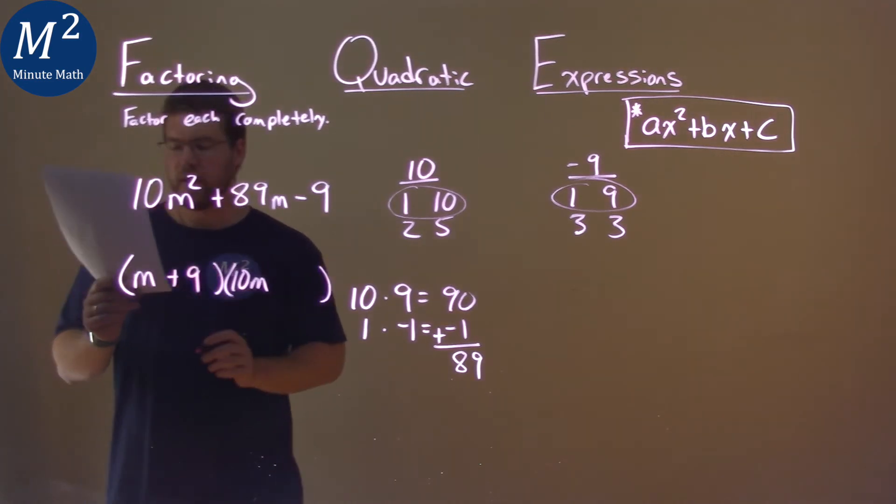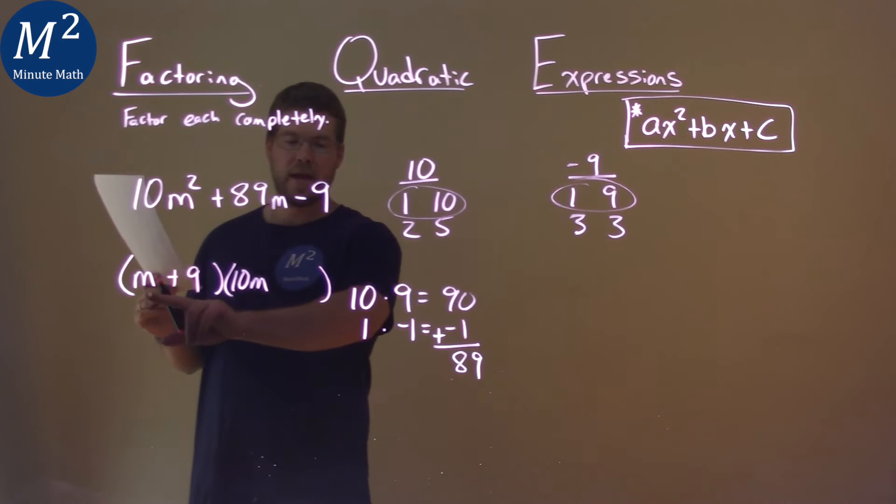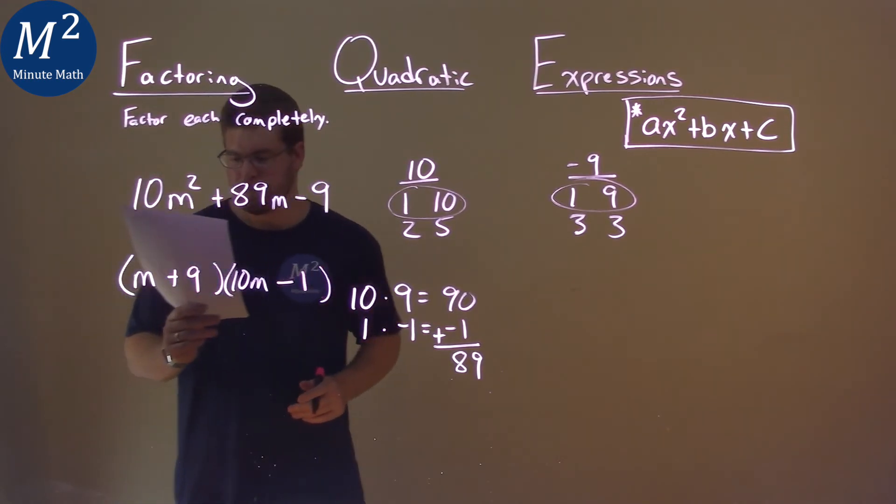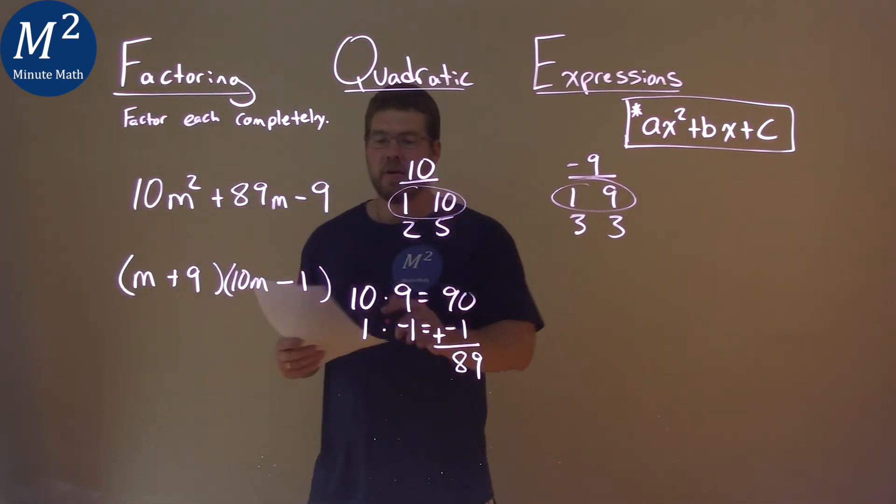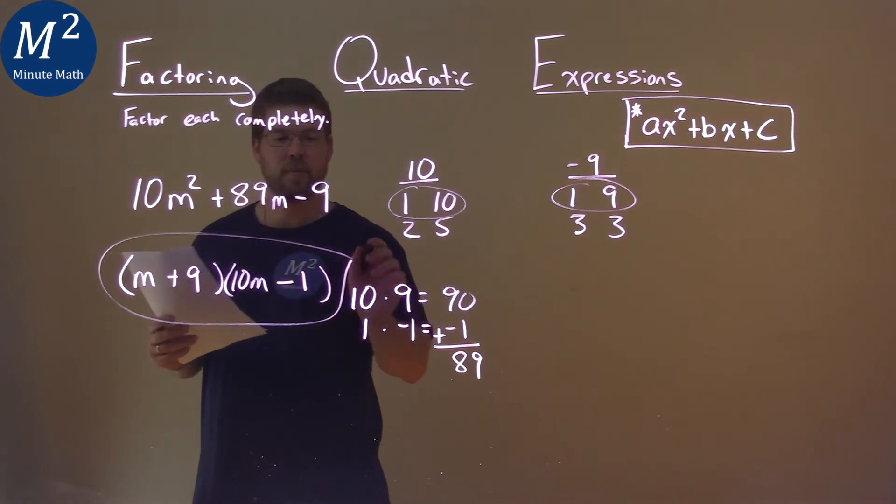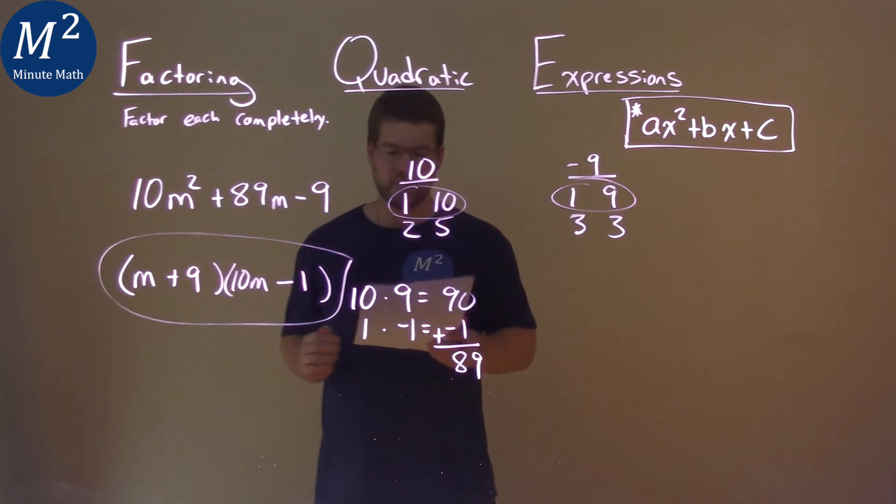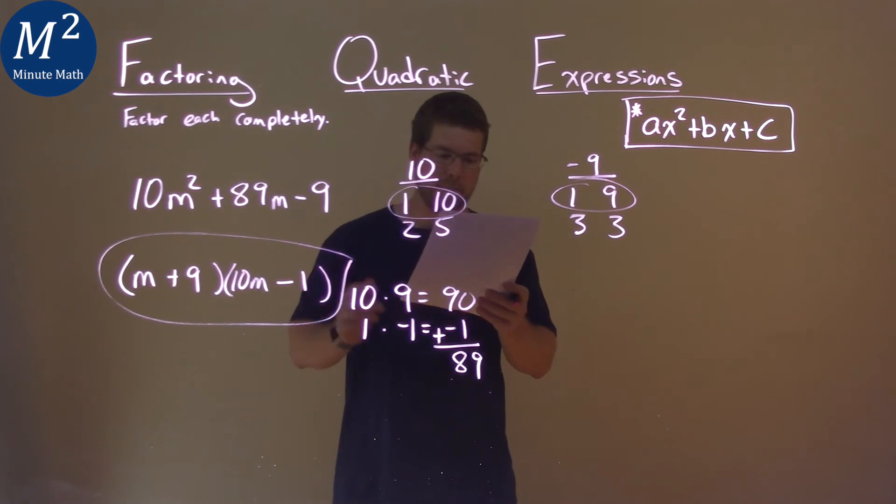So we have positive 9 there, and then that 1m gets multiplied by a negative 1 over here. And so there we have it. Our final factored form answer is m plus 9 times 10m minus 1.